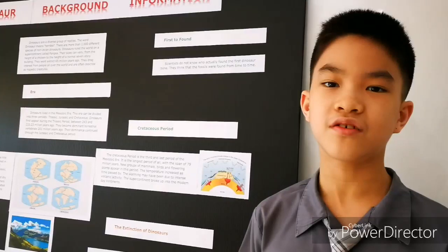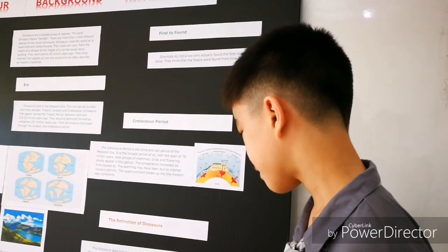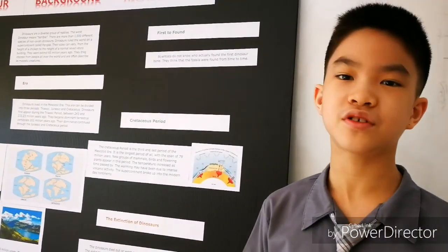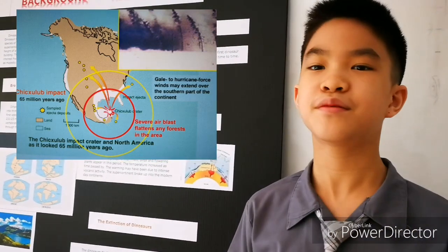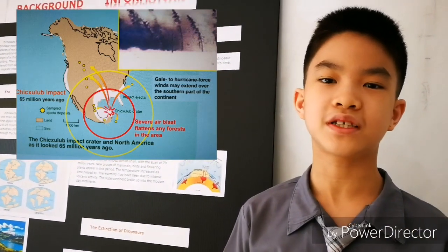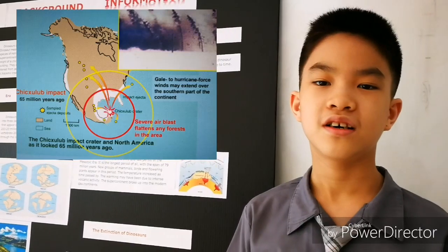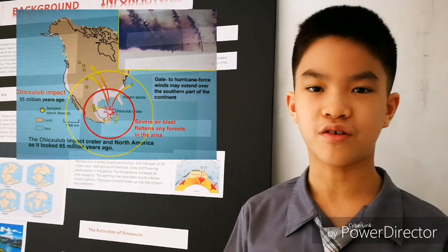The extinction is known as the Cretaceous-Tertiary extinction. This was the end of the Mesozoic era. The event is estimated to wipe out 75% or three-quarters of the species all around the world.